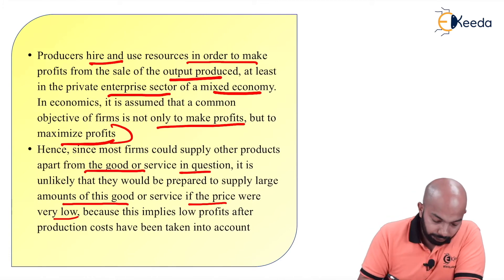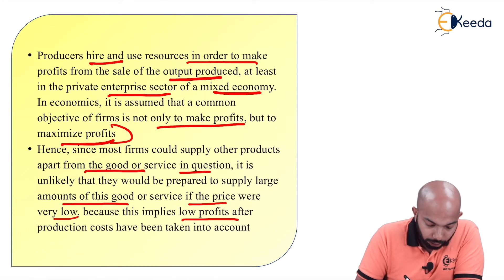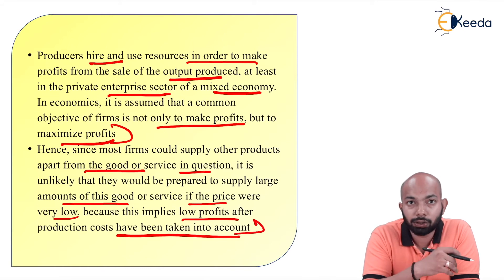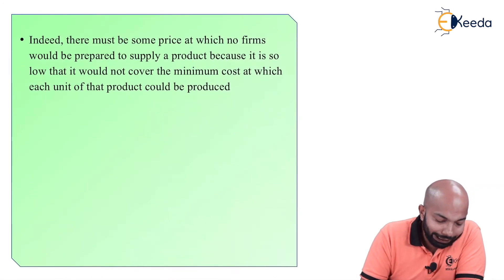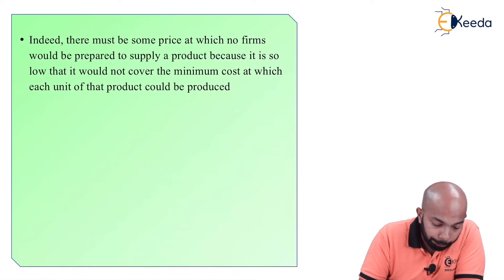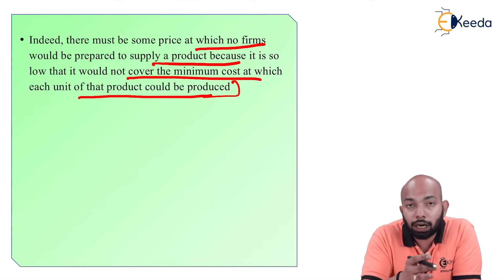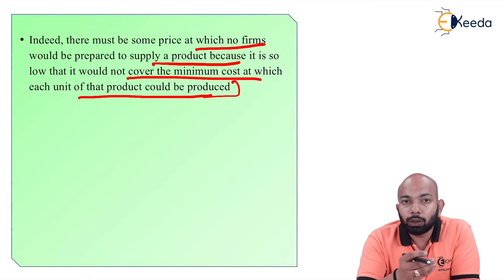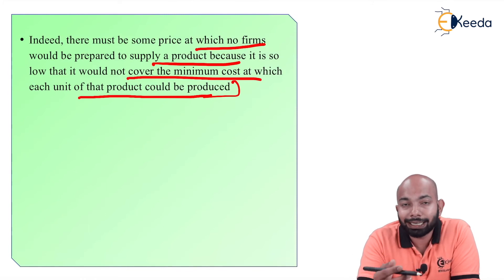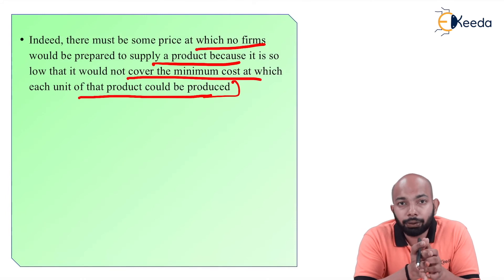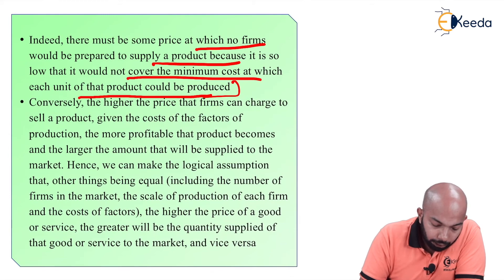This implies low profits after production costs have been taken into account. If the selling price is almost equal to the production cost, what profit are you going to make? There must be some price at which no firm would be prepared to supply a product, because it is so low that it would not cover the minimum cost of producing each unit. If none of the firms are prepared to supply at a lower price, no firm will go ahead and supply, as it would cause losses and eventually lead to bankruptcy.